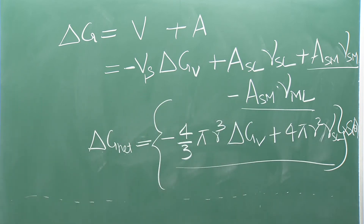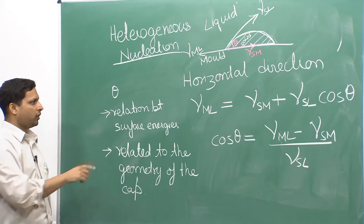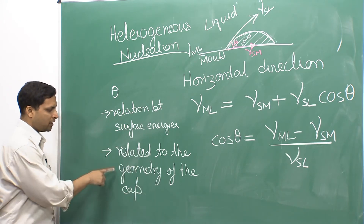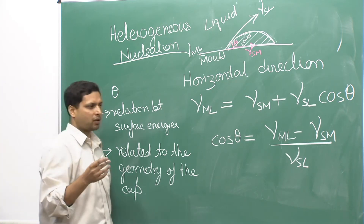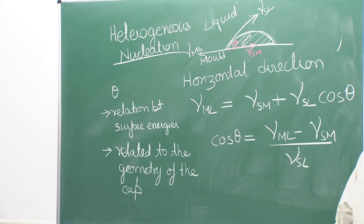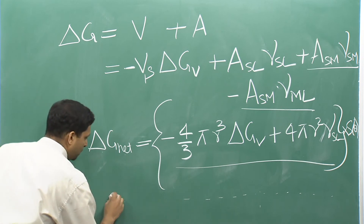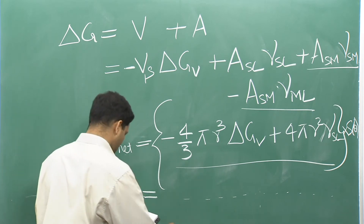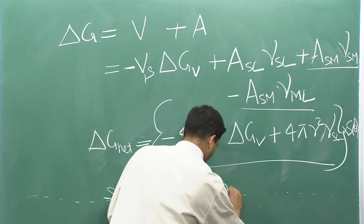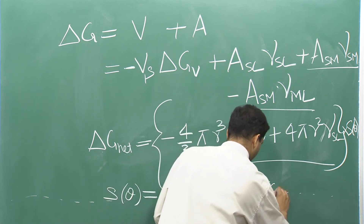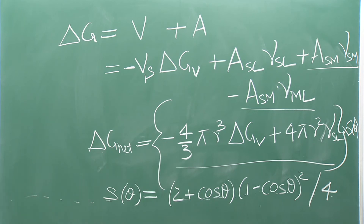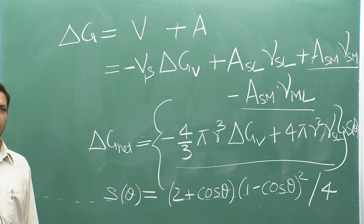This similarity is possible because θ is related in two different ways to the geometry. First, it relates the surface energy terms. Second, it also relates the geometry of the cap — what fraction of the sphere we are looking at.